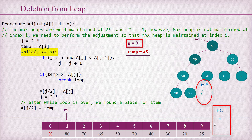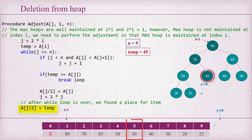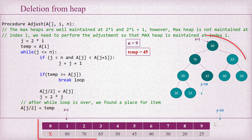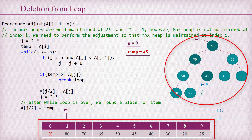We come out of the loop. Finally, we copy temp — that is 45 — at index j/2. The current value of j is 10, so j/2 is 5. We copy 45 at index 5, and the heap has been restored.